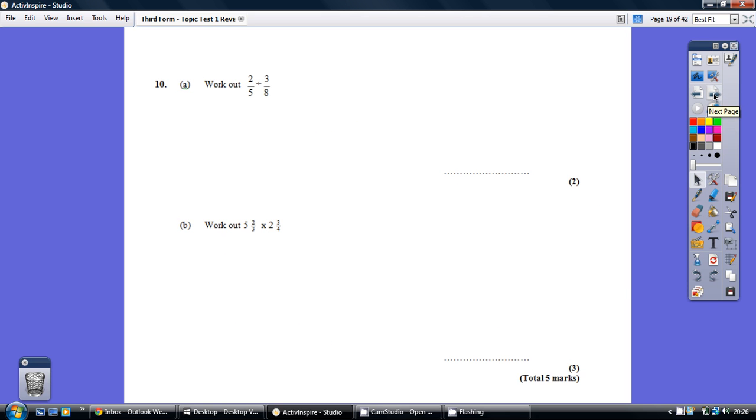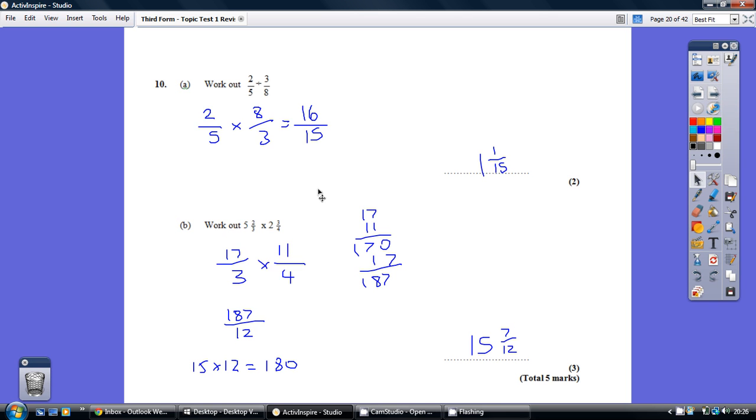Question 10, have a go. So, dividing, the process is keep the first fraction the same, turn it into a timesing one, but flip over the second one.